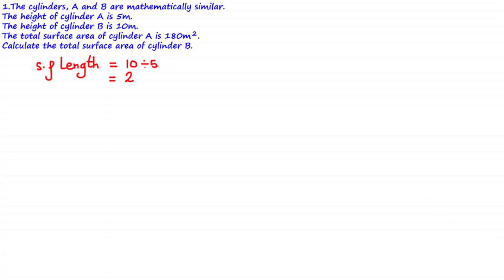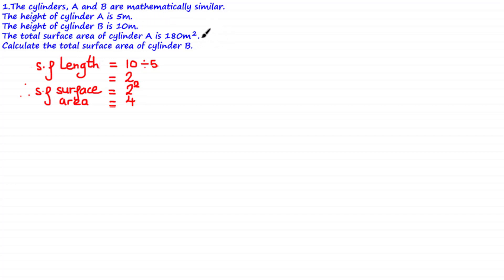From the relationship learned in the previous tutorial, the scale factor of surface area is equal to 2 squared, which is equal to 4. Since the height of B is greater than the height of A, it's correct to assume that the surface area of B is greater than the surface area of A, because both shapes are mathematically similar.